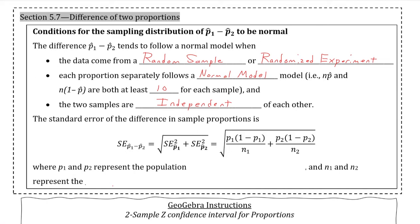The standard error of the difference of the sample proportions is shown below, with this formula of the standard error being the square root of the standard error for the first proportion squared, plus the standard error for the second proportion squared, all under a square root.